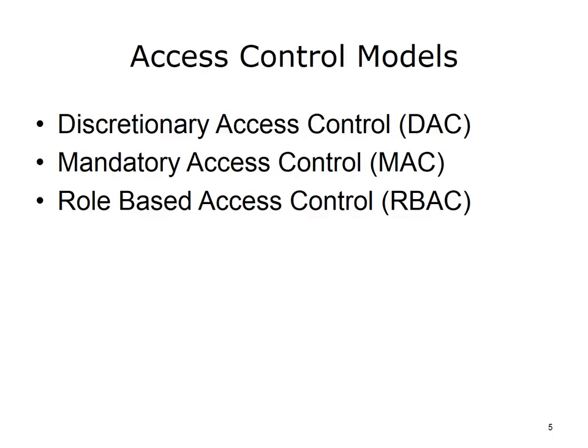There are three primary models for access control. Discretionary access control, DAC, means that it is completely up to the owner of the objects who has access to them and what access they have. For example, if I create a file, I can decide who has access to it and what permissions or rights they have: read, write, delete, etc. It is up to the discretion of the owner or administrator of a system who has access to what.